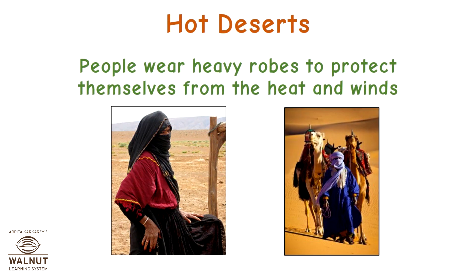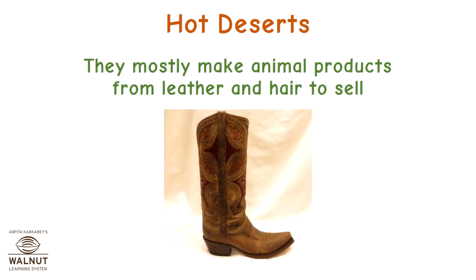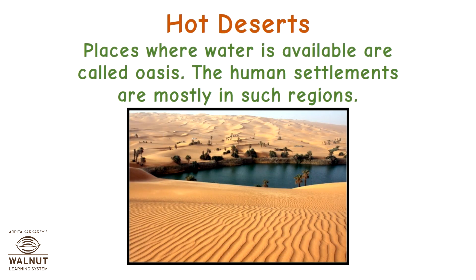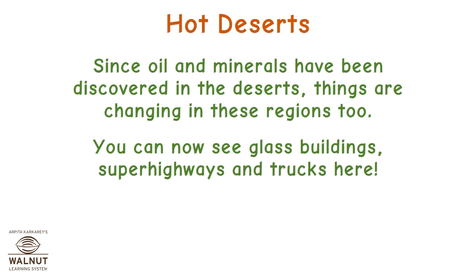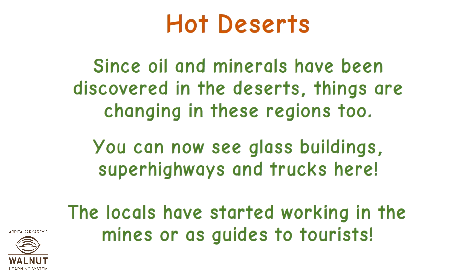People wear heavy robes to protect themselves from the heat and winds, and mostly make animal products from leather and hair to sell. Places where water is available are called oases, and human settlements are mostly in such regions. Since oil and minerals have been discovered in the deserts, things are changing — you can now see glass buildings, super highways, and trucks, and the locals have started working in the mines or as guides to tourists.